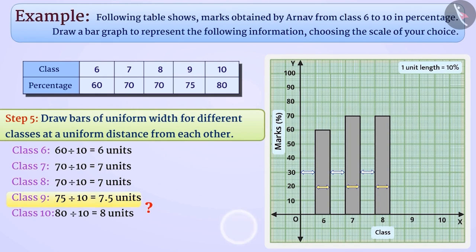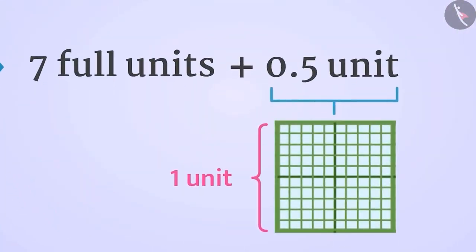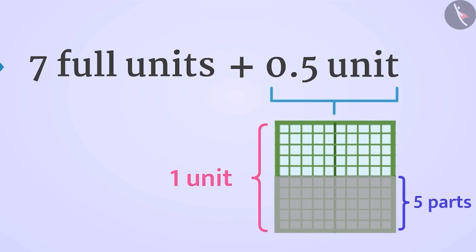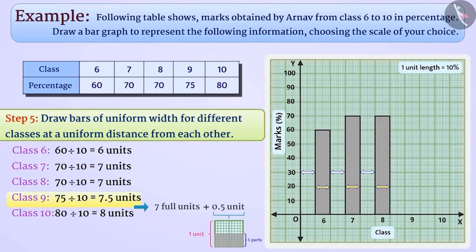You are absolutely right. 7.5 means 7 full units and 0.5 units means 5 parts out of 10 parts of 1 unit. Therefore, for class 9, we will draw a bar of 7.5 unit length in this way.